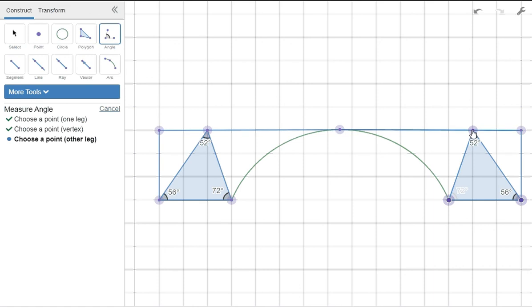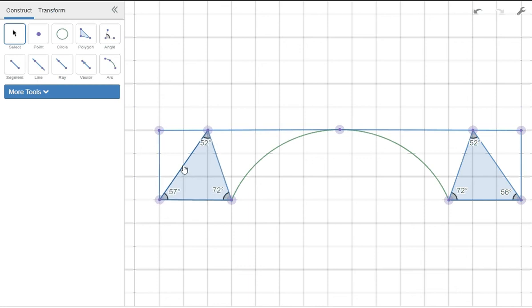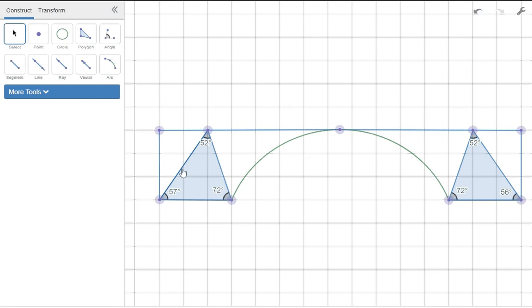So we want to make sure these angles are the same as this one, which is good in this case. Now we're going to measure the length of each side. You click on a segment and move a little bit. Okay, so you click on the segment and then press label and it will measure automatically. And I'm going to do the same on the other side.